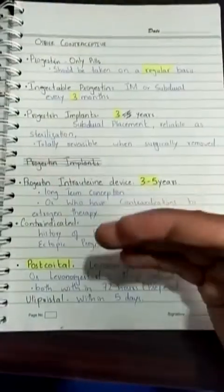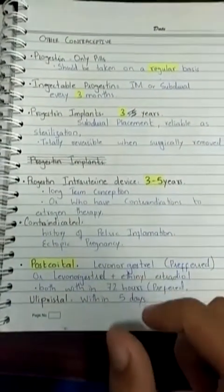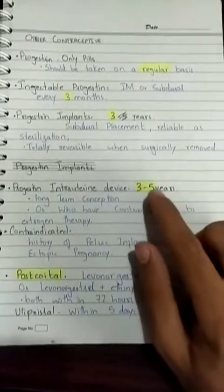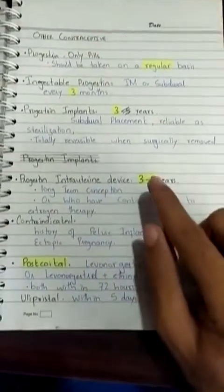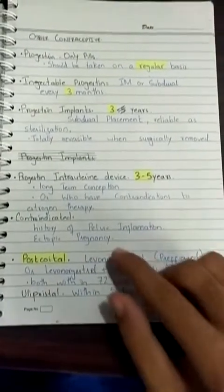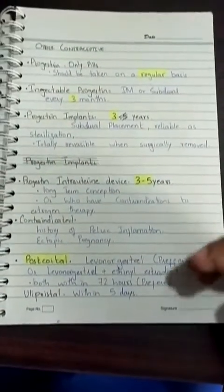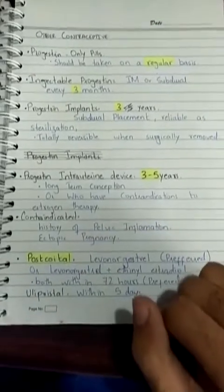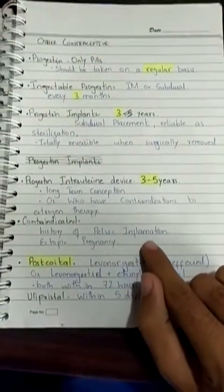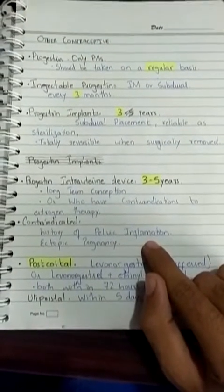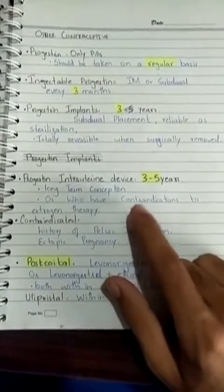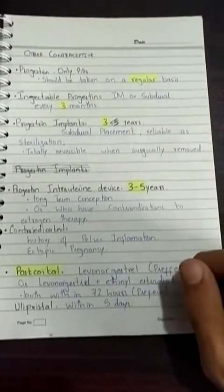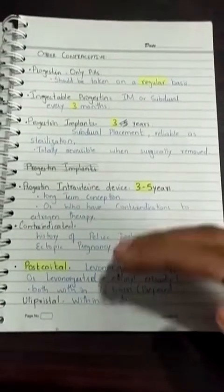The progestin intrauterine device is a device placed inside the uterus that provides contraception for around three to five years — a very long-term period. It is usually indicated for patients who show contraindications to estrogen therapy. Contraindications to the IUD include a history of pelvic inflammation or a history of ectopic pregnancy, in which case these devices should not be used.